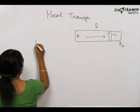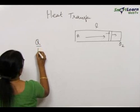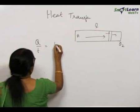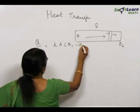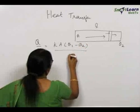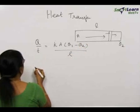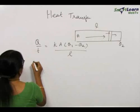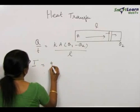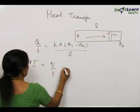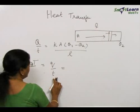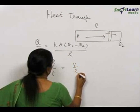Now let us consider this equation Q by T equal to K A theta 1 minus theta 2 by L. Let us compare this with the flow of electric current which is due to the flow of charge per unit time and this is equal to V by T equal to V by R.